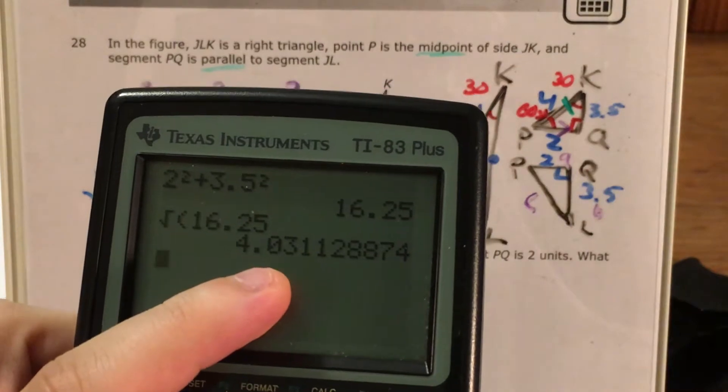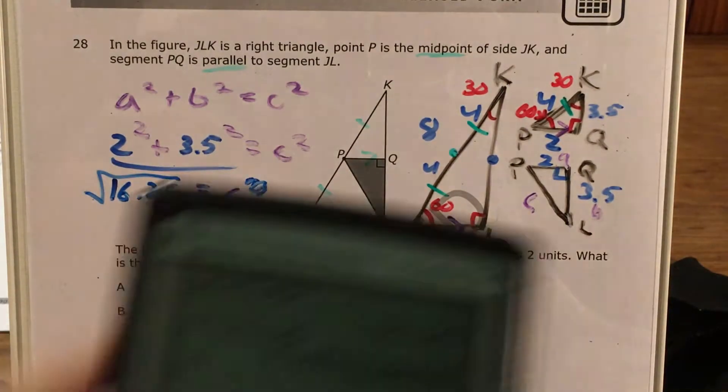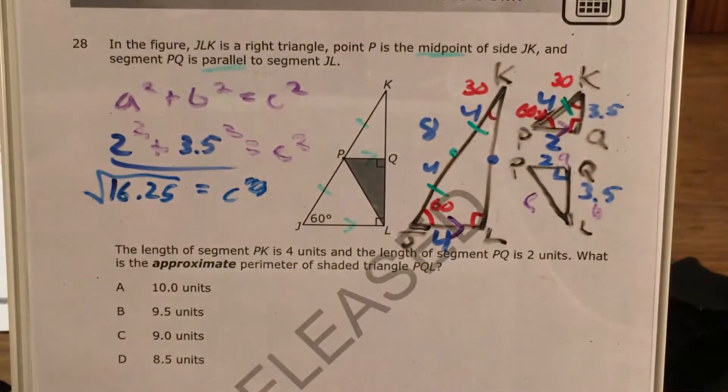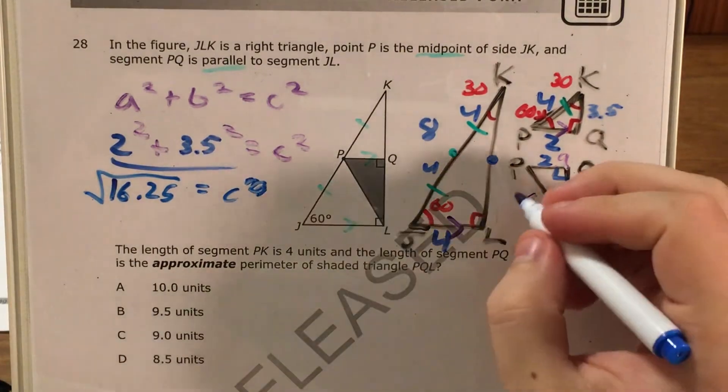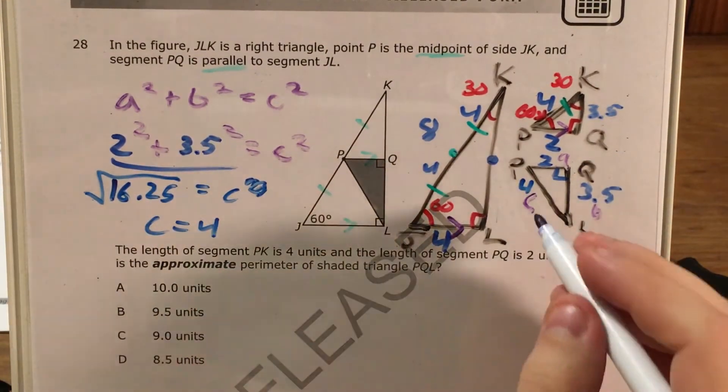So I take the square root of 16 and 25 hundredths. And that's really, really close to 4. If we remember that our actual number for this was a little less than 3 and a half, we can say that we're pretty sure that this is a little less than 4.03 and just call it 4. So now, we're confident that c is 4.